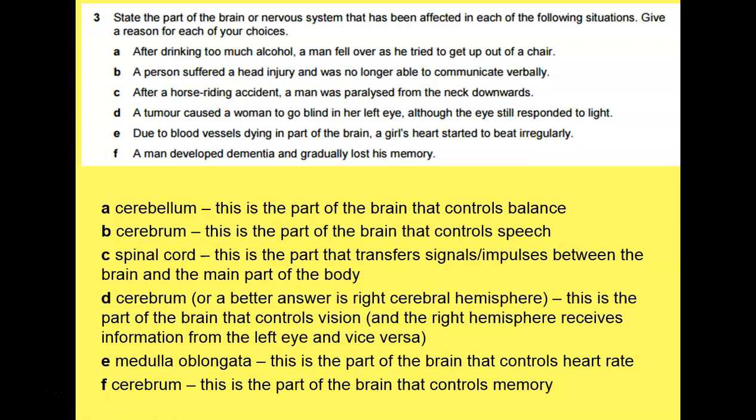Due to blood vessels dying in parts of the brain, a girl's heart started to beat irregularly. That's going to be the medulla oblongata, which is where heart rate is controlled.